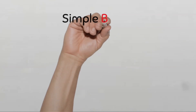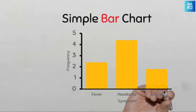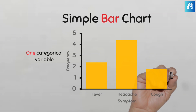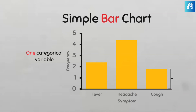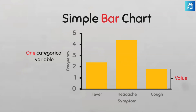In a simple bar chart, the bars represent the whole of the magnitude of a single categorical variable. The height of each bar indicates the value of the category represented. So in this example, we see that we have one categorical variable, which is symptom, and it has three categories, and each category is represented by a bar whose height indicates its frequency.